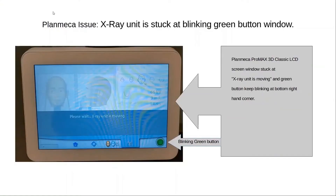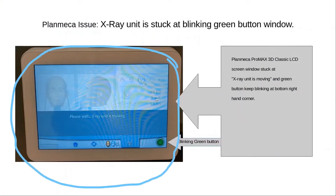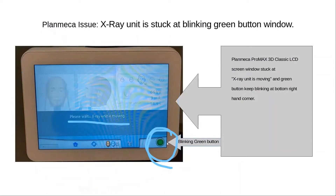If you are a Planemaker Pro Max 3D Classic X-ray Machine user and you are faced with an issue where you see a screen which says 'Please wait, X-ray unit is moving,' and you see a button at the bottom which keeps blinking and does not move forward, then this video is for you.